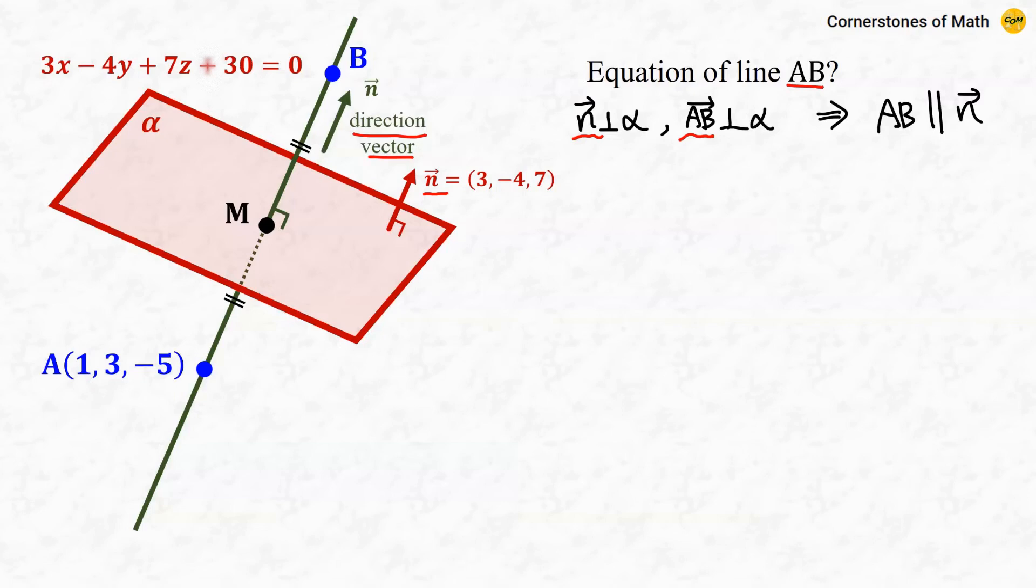This means that vector N is also the direction vector of line AB. And I have already explained in the previous video how to find the equation of a line using direction vector.